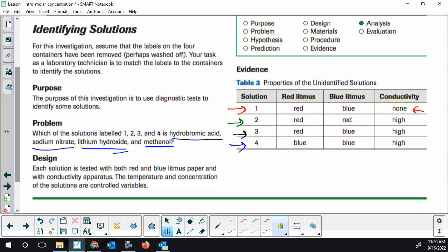So we're looking for staying red, turning red, and then acidic solutions are conductive. So we're looking for number two, red, red, and it's highly conductive. So hydrobromic acid should be solution two.